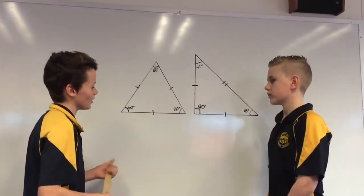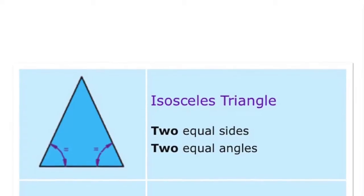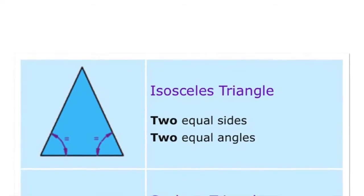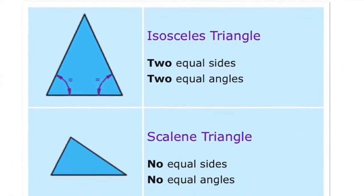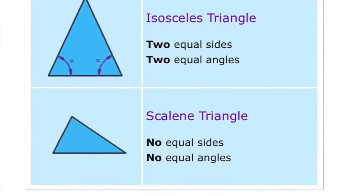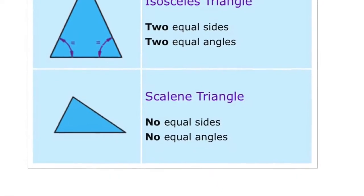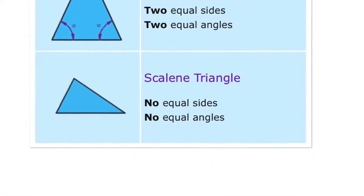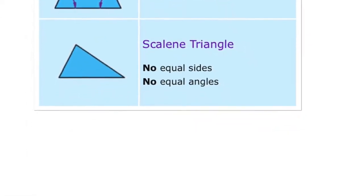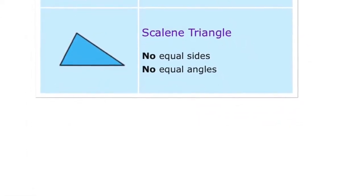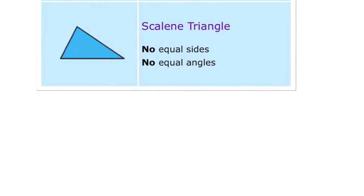Exactly. Some other triangles are the isosceles triangle — it has two equal sides and one that isn't. Another triangle is the scalene triangle, where each angle and side are different.